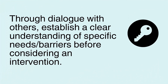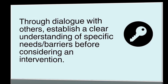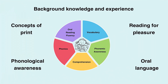Through dialogue with others, establish a clear understanding of specific needs and barriers before considering an intervention. This image, as discussed elsewhere in the resource, highlights possible areas of strength or need in relation to reading and the interconnection between these. Considering each of these areas will allow us to clearly understand a child's specific needs before selecting an intervention. For example, what do we know about the child's knowledge and skills of reading — that is, the five components and how they interconnect?